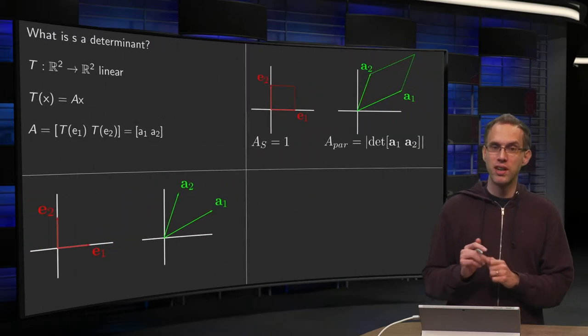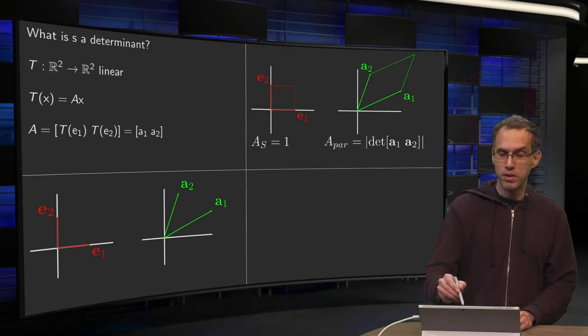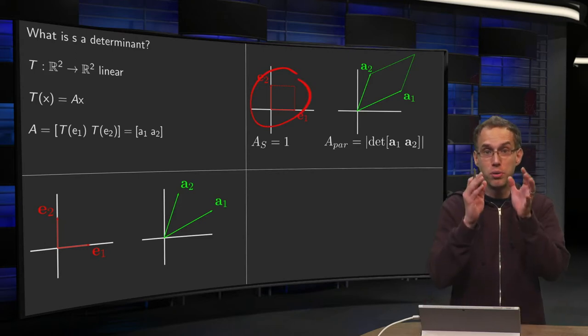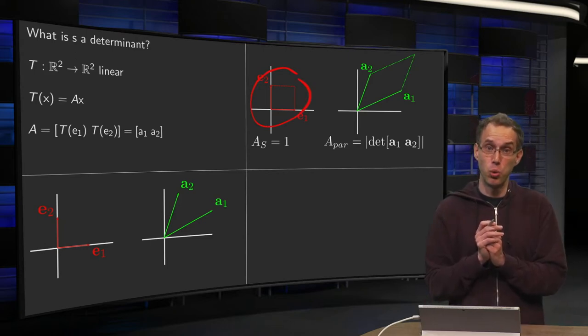Now, what about the determinant? We can form the parallelogram formed by E1 and E2. That's easy. It's the unit square, so its area is just 1.